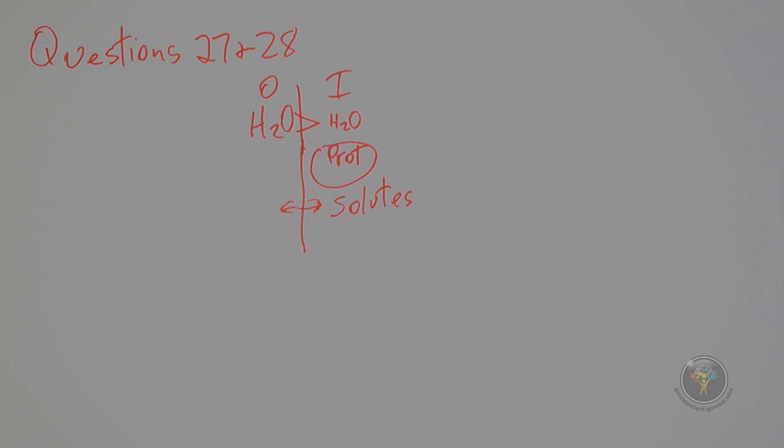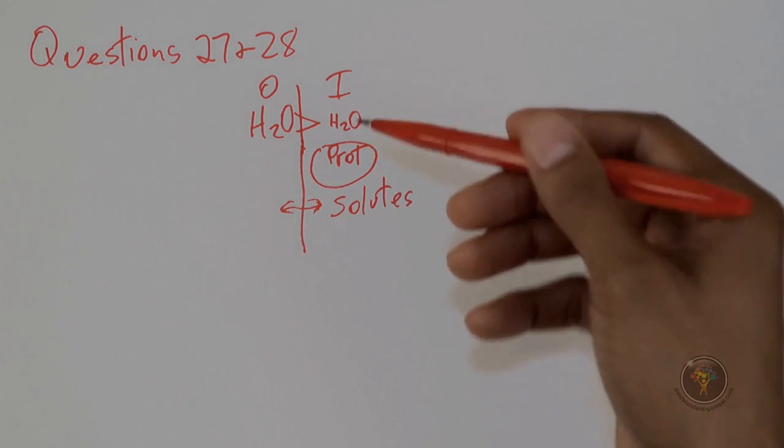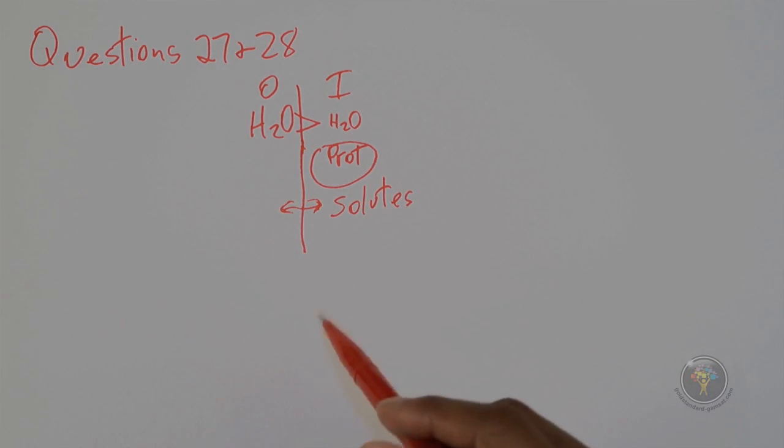So then we're left with answer choice D: fluid and solutes initially lost - so there would be solutes that would be initially lost because of the high hydrostatic pressure on the arterial end - are largely replaced along the capillary.